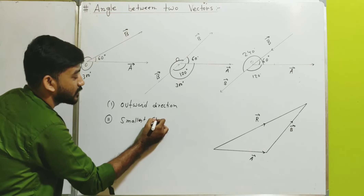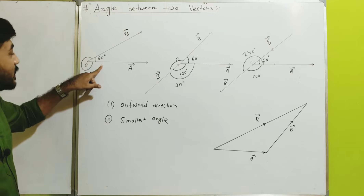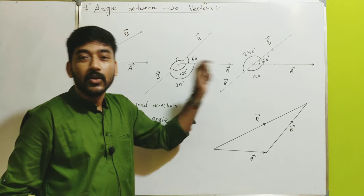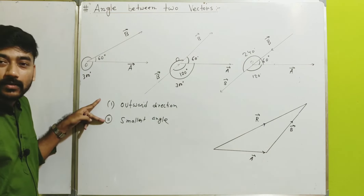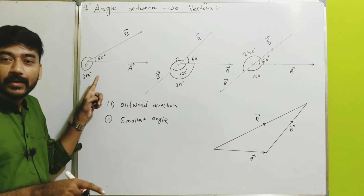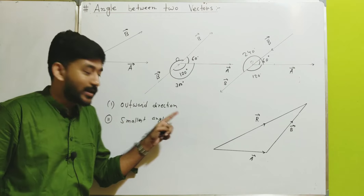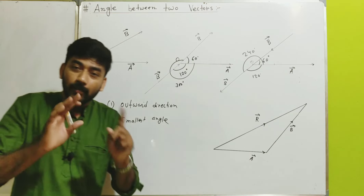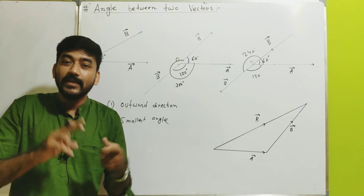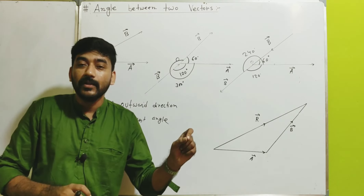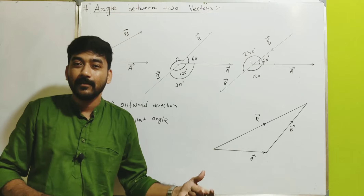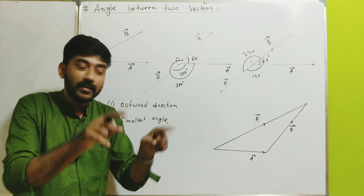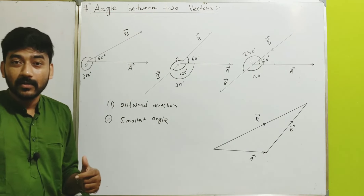This brings us to the second rule: we must take the smallest possible angle at that point. When two lines intersect at any point, there will always be more than one possible angle. When we talk about the angle between two vectors, we first ensure the vectors are outward from the point, and then we take the smallest possible angle at that point. So the two rules are: first, vectors must be outward from the reference point; second, take the smallest possible angle.